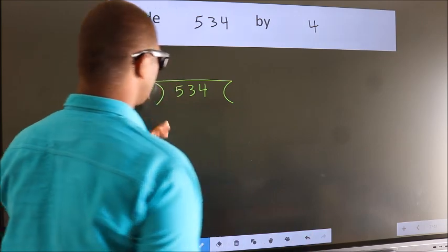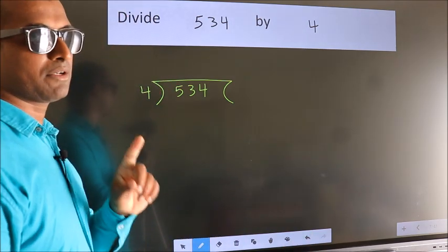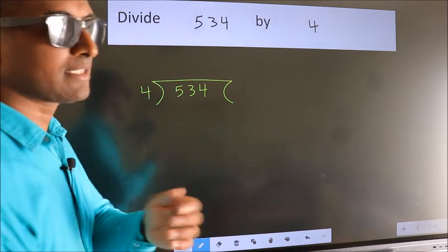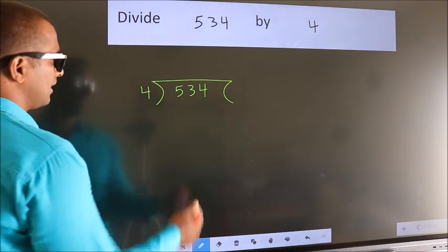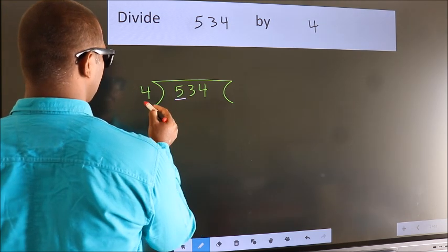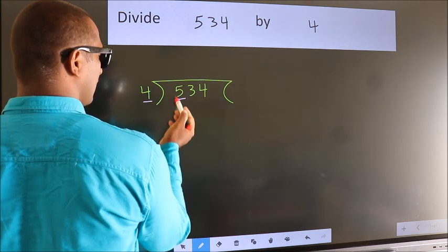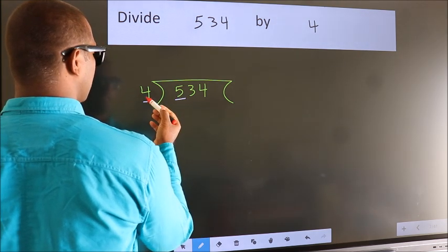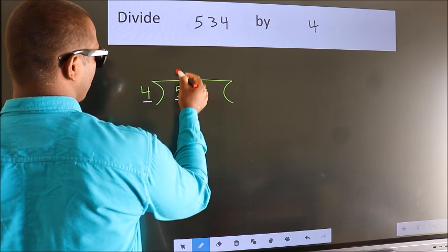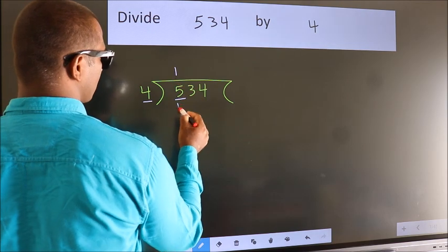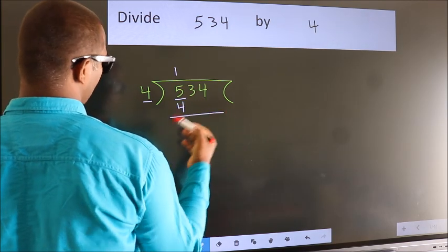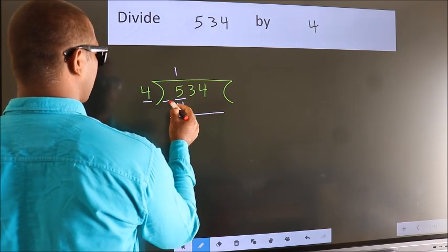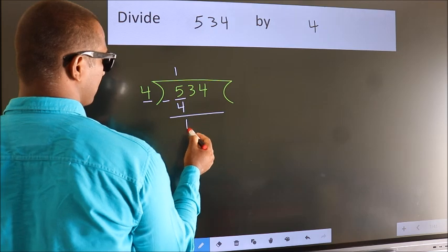This is your step 1. Here we have 5, here 4. A number close to 5 in the 4 times table is 4 once 4. Now we should subtract. We get 1.